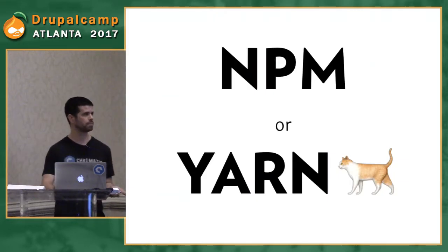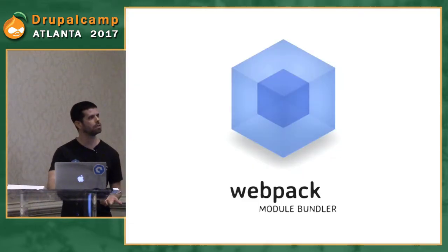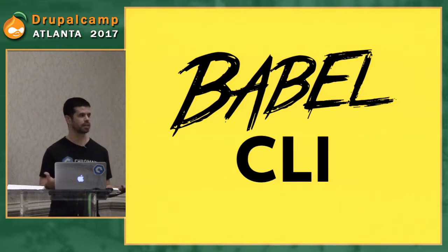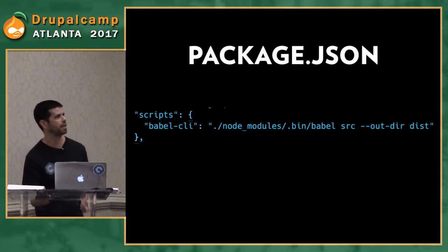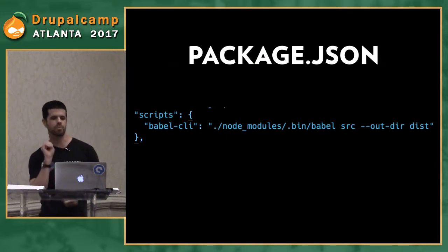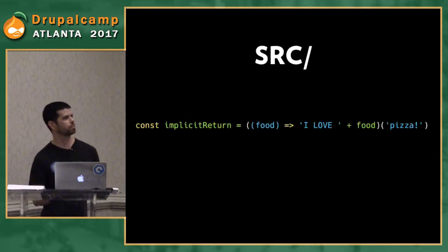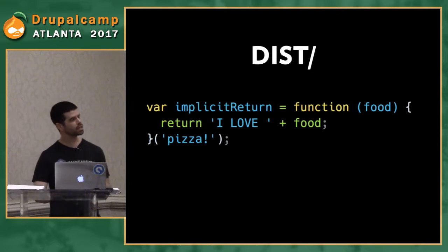You'll also need NPM or Yarn — I like Yarn — and some type of task runner: Gulp, Grunt, or Webpack. Or if you don't want a task runner, Babel provides a CLI. In my package.json I have a simple command: go into the Node Modules Babel directory, use my source folder, and output to my dist folder. I have an example of an implicit return with an arrow function in my source folder. Run 'npm run babel-cli' and boom — you have your ES5 code.